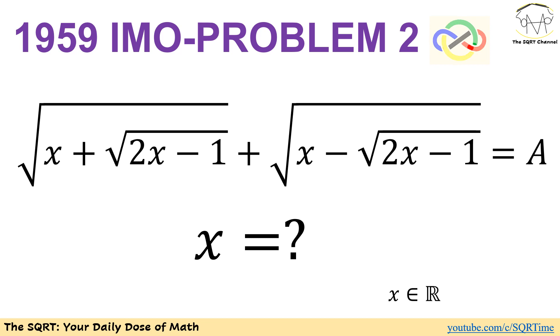Hello everyone, welcome to the SQRT channel. In this video we are going to take a problem from the International Mathematical Olympiad, or IMO. As you know, IMO is the world championship mathematics competition for high school students, and the first IMO was held in 1959 with seven countries participating. This problem came from that particular competition. Since it was the first IMO ever, the problems are not going to be that difficult. We are going to take problem two of that competition.